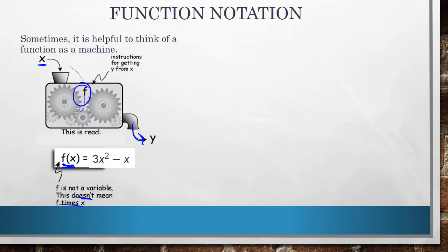This f is just a name. So this is telling us we're going to go to the function named f. We're going to be inputting an x value. And what it's going to do to that x value is it's going to square it, multiply it by 3, and then subtract that x value from there. So it's really important you note that. This letter that's in front is not a variable. It's a name of the function.